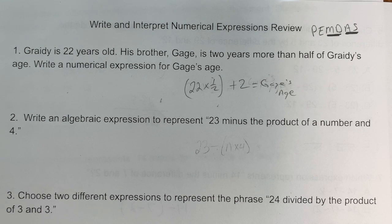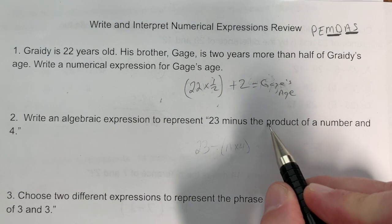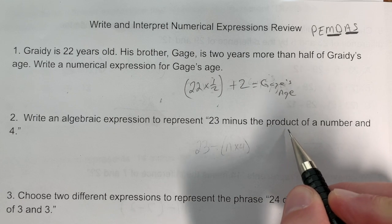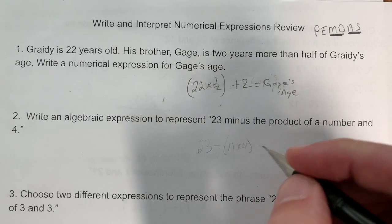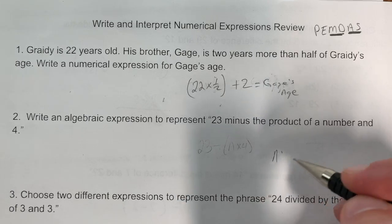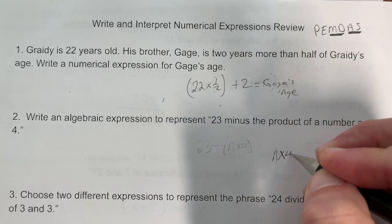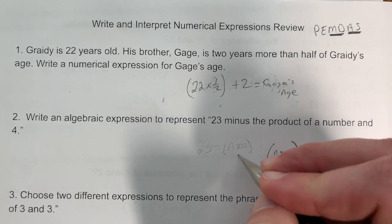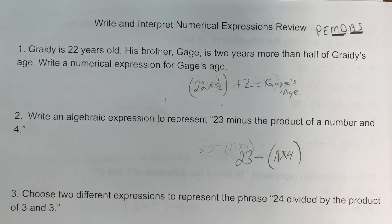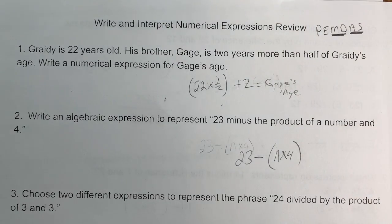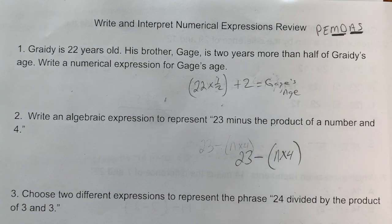Next: 23 minus the product of a number and four. First we find the product, because it's minus the product. The product is the answer to multiplication, so we do n times four, then take 23 minus that — giving us 23 minus (n × 4).